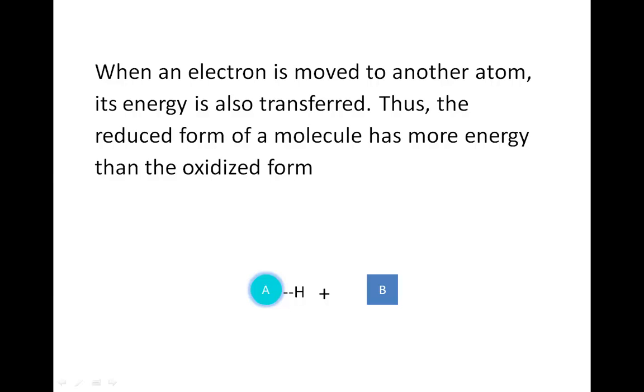When an electron is moved to another atom, its energy is transferred with it. Therefore, the reduced form of a molecule has a higher level of energy than the oxidized form.